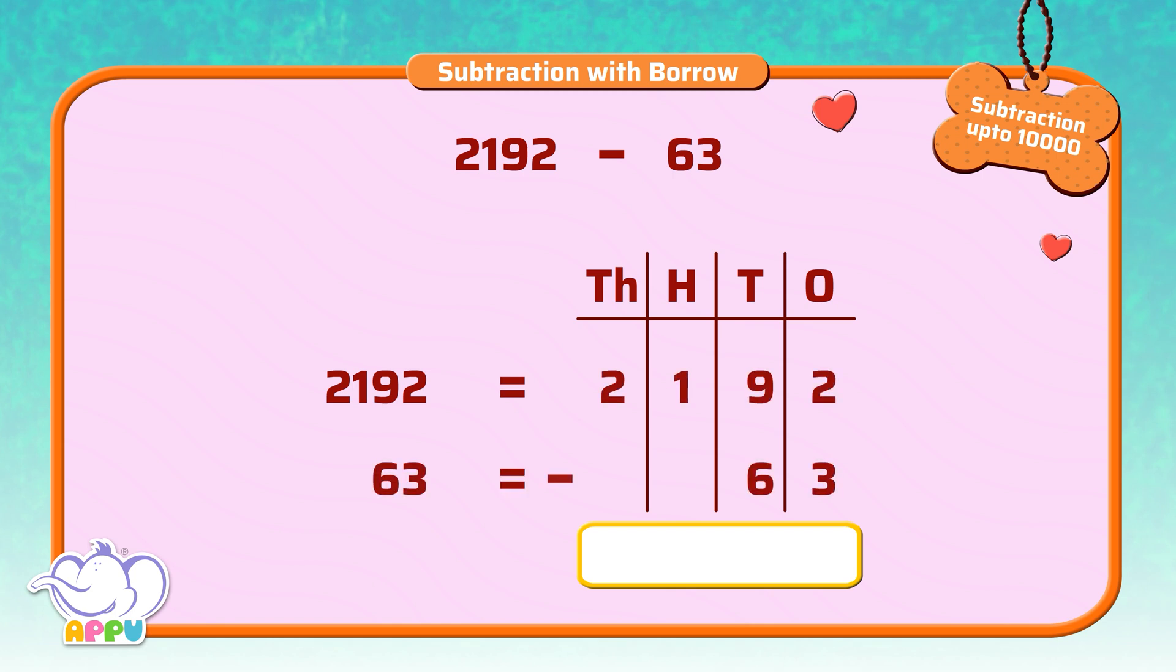We subtract ones first. We cannot subtract 3 from 2, so we borrow from the left column, which is the tens column. When we do this, 9 tens become 8 tens, and we get 1 to the ones column. So now we have 12.